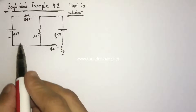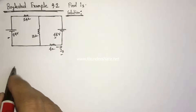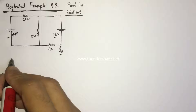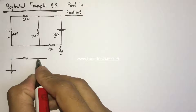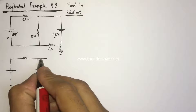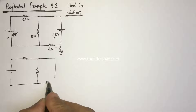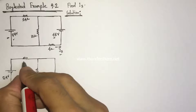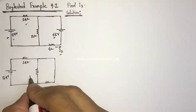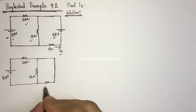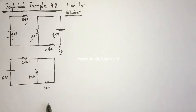Let us first consider the effect of the 54-volt voltage source. The equivalent circuit shows: 54 volts, then a 24-ohm resistor, then a 12-ohm resistor, the 48-volt source is short-circuited, and a 4-ohm resistor. We have to identify the current I3 — let the current be I3 prime.